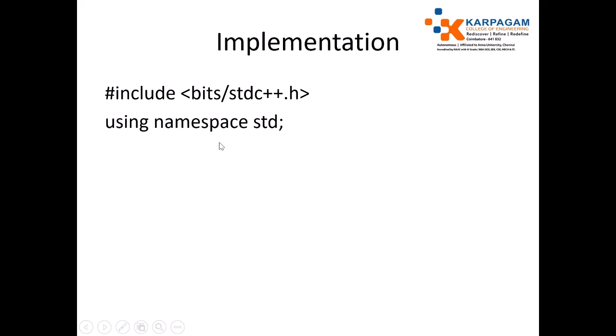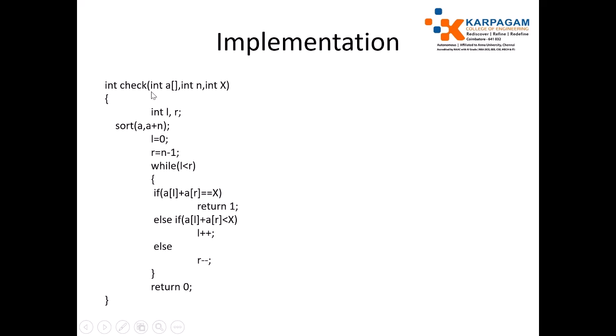I will show the implementation. First we have to include the header file. Here I use C++ so just include the namespace to make use of cin and cout. Here I need to define a function which returns an integer, 1 or 0. If it is yes, return 1, if no, return 0. This accepts array elements, size of array, and X. I declare variables L and R and sort the array elements in ascending order by using the sort function which is available in C++. If you use C, just use qsort function.